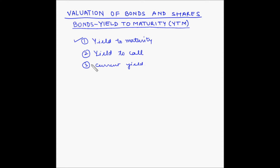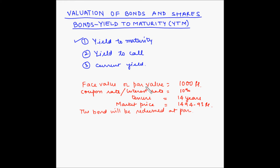Consider the case of the following bond. The face value or par value is 1000 rupees, the coupon rate or interest rate is 10%, the tenure is 14 years, the market price is 1494.93 rupees, and the bond will be redeemed at par.